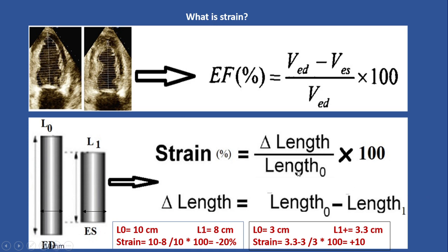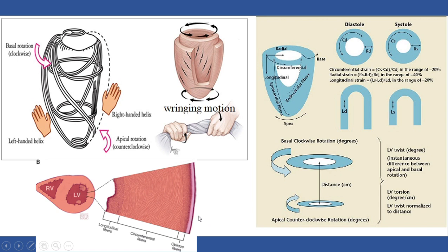Now let's see another example for radial strain. Imagine a segment where at end-diastole the thickness is 10 mm, and at end-systole it becomes 14 mm. The amount of radial strain will be 40%. Since the number is increasing in the direction of the definition, the radial strain will be positive 40%. Now let's see how many types of strain we have.